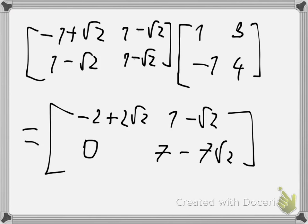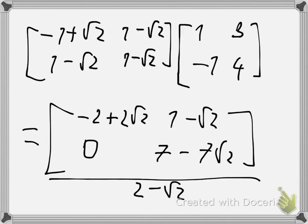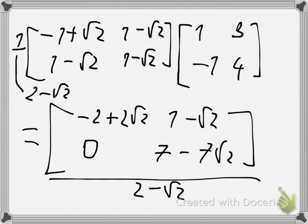This result looks correct. We then divide through by (2 - √2) — or (2 - 2√2) depending on the step — to obtain the final matrix R. That is our upper triangular matrix R.